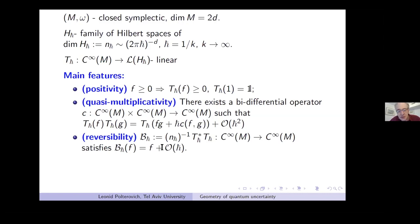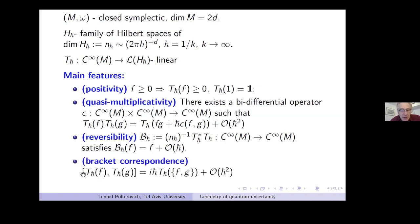One can look at this with bigger resolution and get to a pretty interesting point. Finally, the bracket correspondence — the main feature of quantum-classical correspondence — states that the commutator corresponds to the Poisson bracket: [T_{h-bar}(f), T_{h-bar}(g)] = i·h-bar·T_{h-bar}({f,g}).